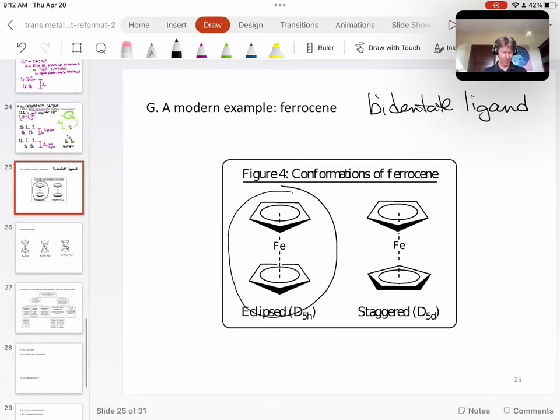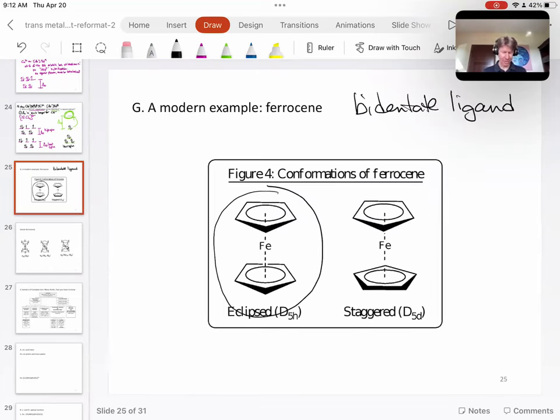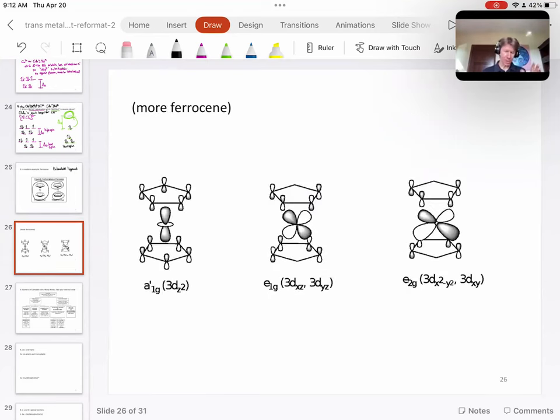So we're going to focus on just the one where it is staggered, so that's going to be this one here. You'll see the points of the cyclopentadienyl rings are opposite each other, although it doesn't really matter.